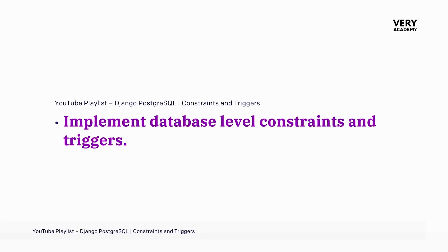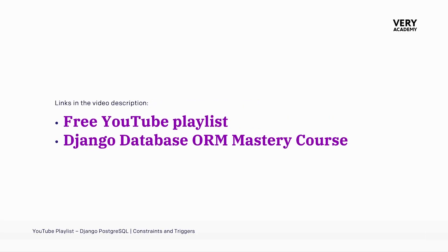If you are currently leveling up your Django and Postgres skills with this tutorial, you might like to know that this tutorial is part of a whole playlist where you will learn how to create database-level constraints and triggers with Django and Postgres. If you like this playlist and want to learn more about Django ORM, do check out our Django ORM Mastery course on Udemy. Links to the playlist and course can be found in the video description.